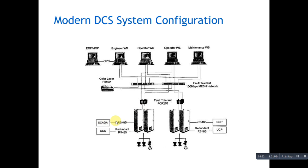It communicates with the SIS, or Safety Instrumented System, on RS-485 independent plane, with the UCP, the Unit Control Panel for the gas turbine, and with the GCP, the Generator Control Panel, on RS-485. From this, it goes to the fault-tolerant FCP-270 redundant controllers.